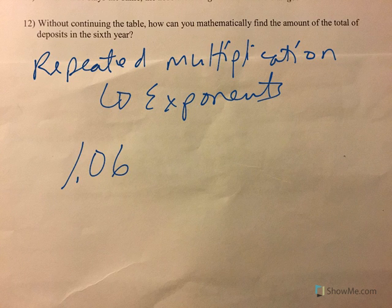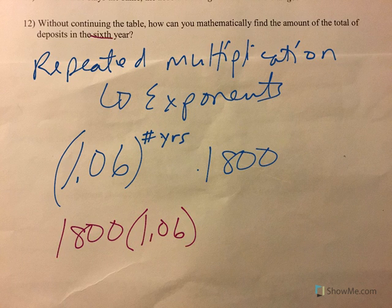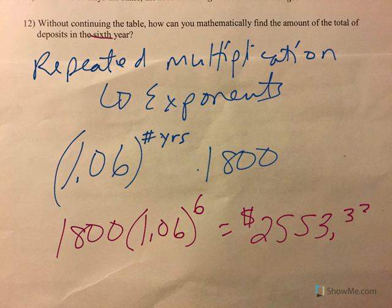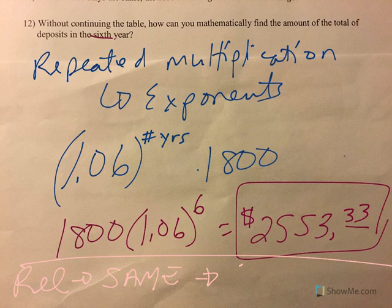We're talking about repeated multiplication, and because every time we're multiplying by 1.06, repeated multiplication is — by definition — exponents. So if we take 1.06 raised to the number of years, and we also multiply that by 1,800, this leads us into an exponential equation. For the sixth year: 1,800 times 1.06 raised to the sixth power equals $2,553.33 without completing the table. If the relative change is the same, we have an exponential model.